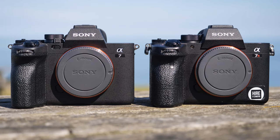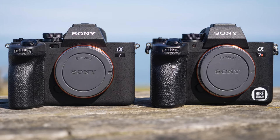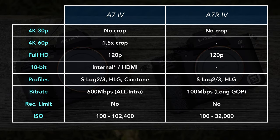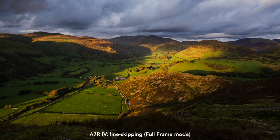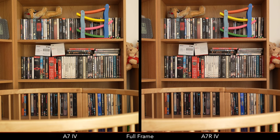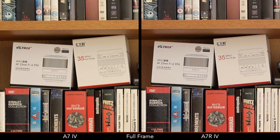There are a lot of differences to talk about when it comes to video. In short, the a7 IV can do 4K 60p in Super 35 mode and can record 10-bit 4:2:2 internally with a maximum bitrate of 600 Mbps. Because of the higher megapixel count, the a7R IV does line skipping when recording video in full-frame mode. The quality is far from awful, but the trade-off is aliasing which can be visible when dealing with fine details. For better quality you need to use the Super 35/APS-C mode.